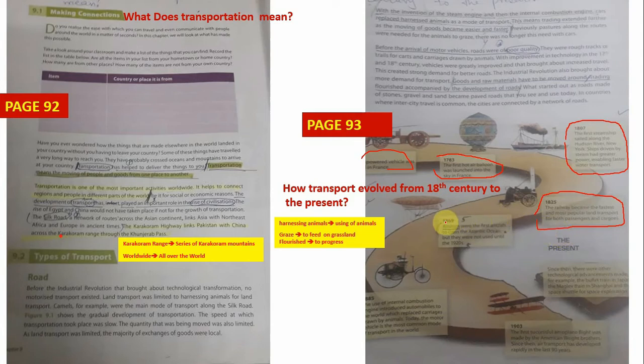In 1869 airships were the first aircraft to cross the Atlantic Ocean but they were not used until the 1920s. Afterwards, move on to 1885. The use of internal combustion engine was introduced in automobiles and that was also a revolutionary introduction because after this internal combustion engine many new vehicles were introduced in the market.